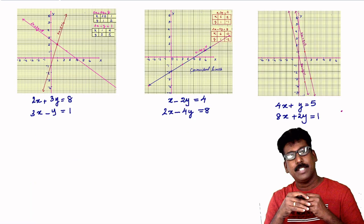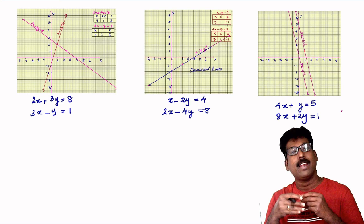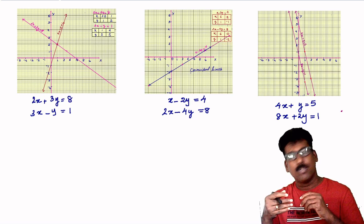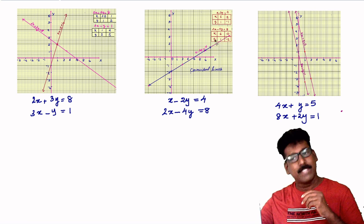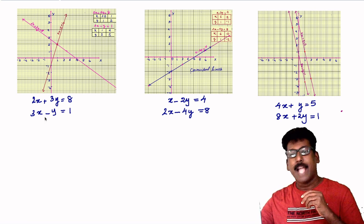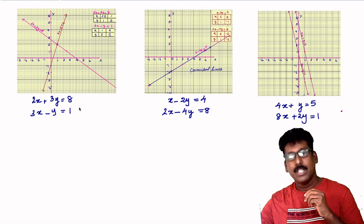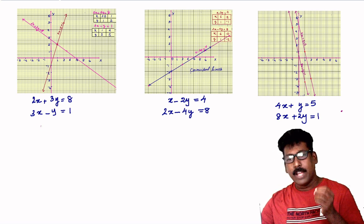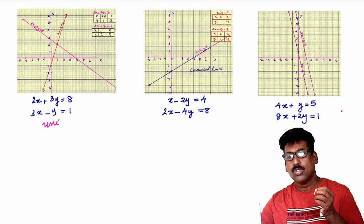The first pair was 2x plus 3y equal to 8 and 3x minus y equal to 1. For this pair you got an intersecting line, and you can say it has a unique solution.